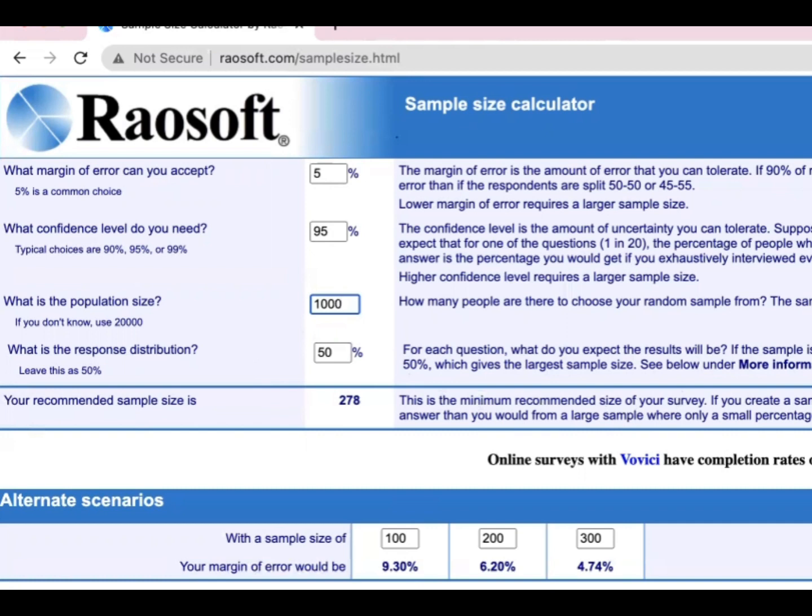If 99%, you need 400. Since the smaller the margin of error, the bigger the sample size. And if you have 90%, you have 214.